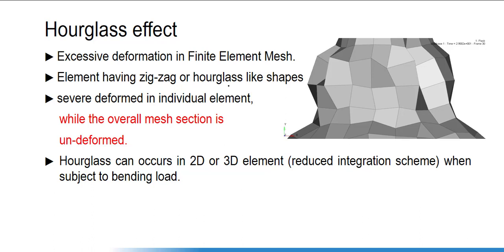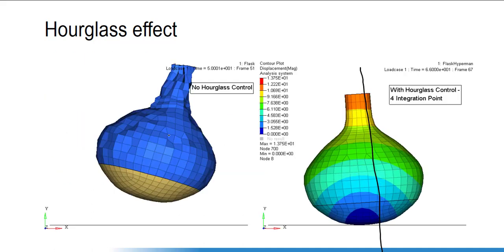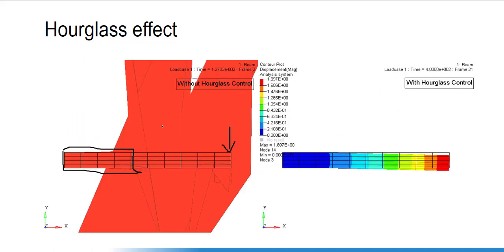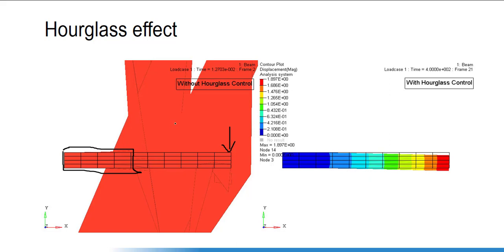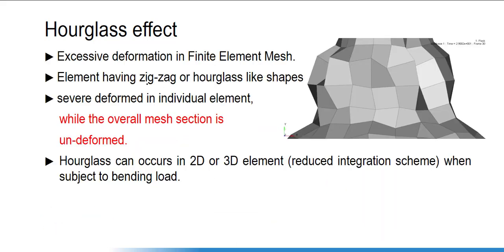In hourglass, we have excessive deformation — in other words, elements having a zigzag mode or hourglass shape. This zigzag shape may not appear all the time. If deformation is somewhat limited, the zigzag shape will appear; otherwise there will be too much excessive deformation and we can't even see the original component.